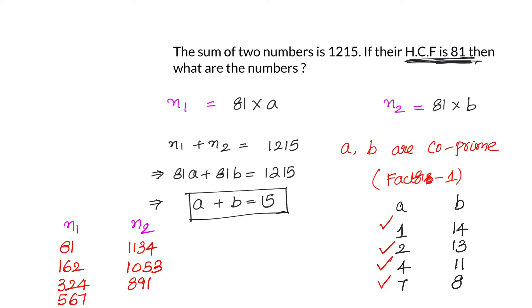So these pairs of numbers, 4 pairs of numbers, satisfy this particular condition. And the numbers are: first set 81, 1134; second 162, 1053; 324, 891; and 567 and 648.